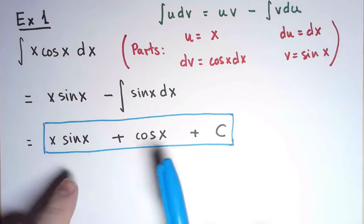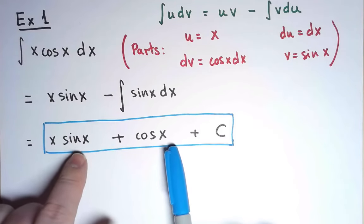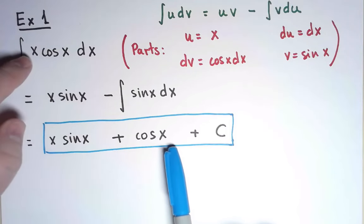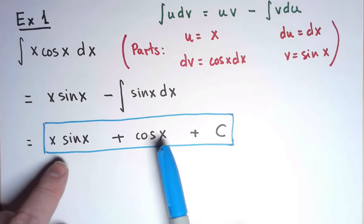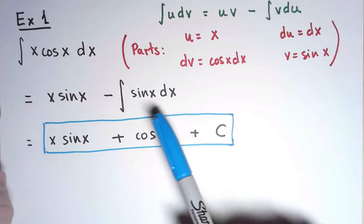As usual, we can verify the final answer by taking this derivative and checking that it is indeed x cos x. It's a good exercise. If we take the derivative of this function, we will see all the steps in integration by parts being undone.